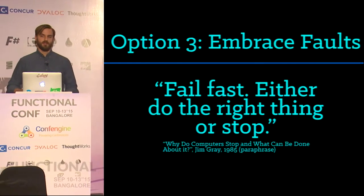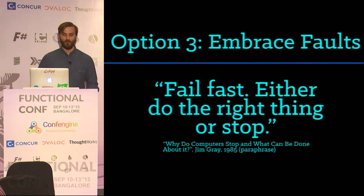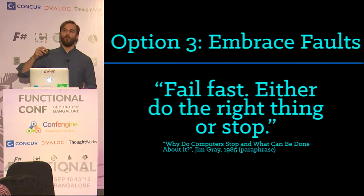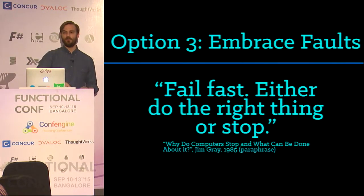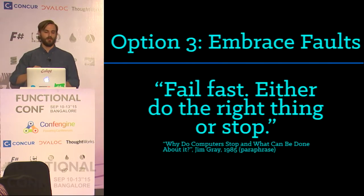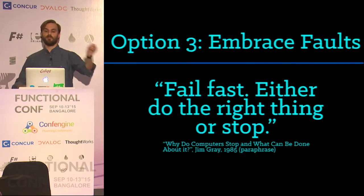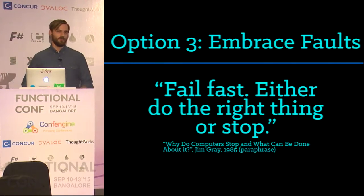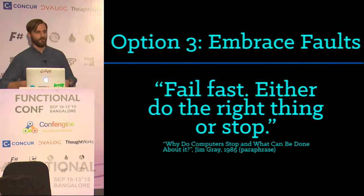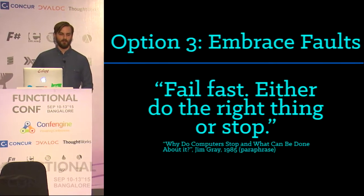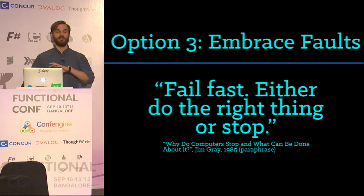There was a computer scientist named Jim Gray — he disappeared at sea, but he wrote a really fantastic paper called "Why Do Computers Stop and What Can Be Done About It?" — written in the 80s, I highly recommend everyone read it. He said: fail fast — either do the right thing or stop. The idea is that when a computer system encounters a state in which it will fail, you can't trust it to correct itself, because the computer has already moved itself into a state you didn't expect. It's foolhardy to believe the computer at that point will be in a state sufficient to allow it to recover. Gray's contention was that you just shut the computer down and restart it really quickly.